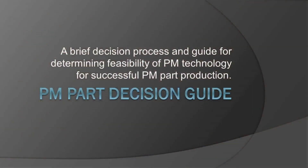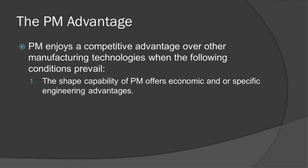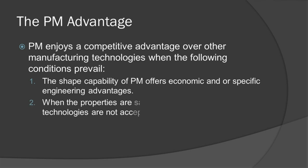Hi, my name is John Inquist. I'm going to provide you with a brief decision process and a guide for determining feasibility of PM technology for successful PM part production. PM enjoys a competitive advantage over other manufacturing technologies when the following conditions prevail: the shape capability of PM offers economic and/or specific engineering advantages, and when the properties are satisfactory or so unique other technologies are not acceptable options.